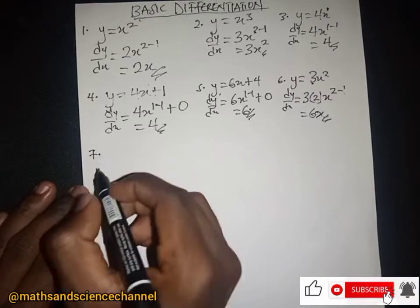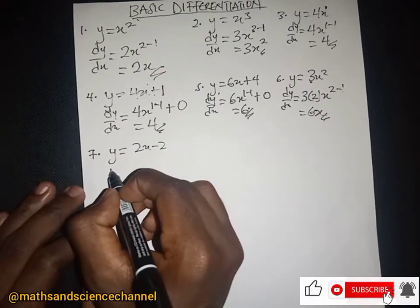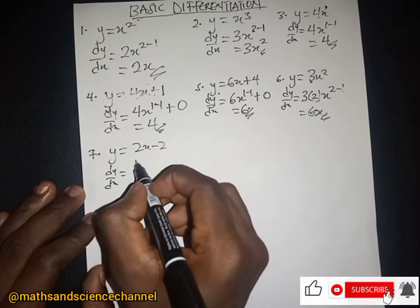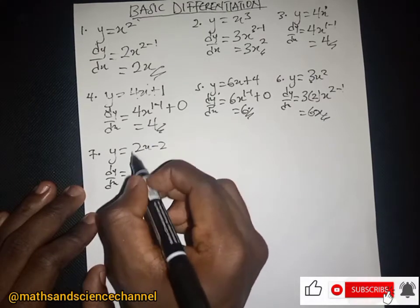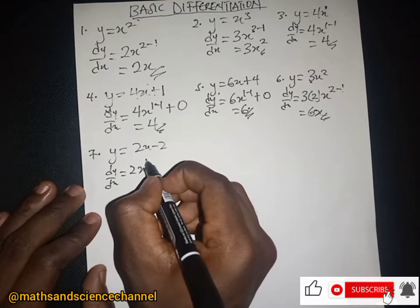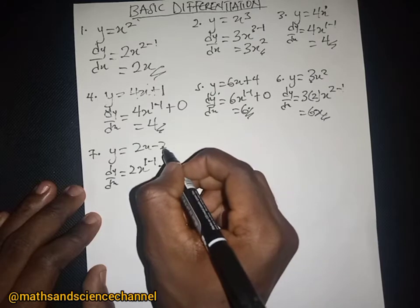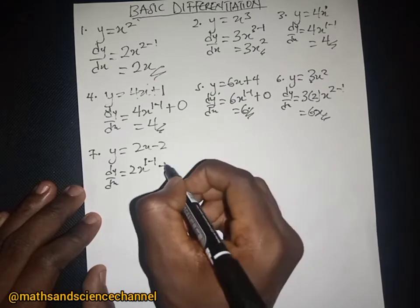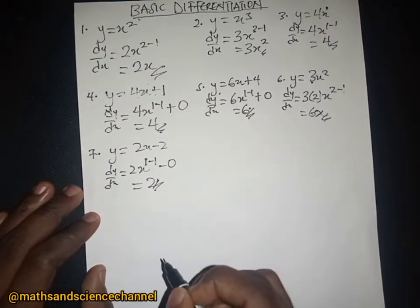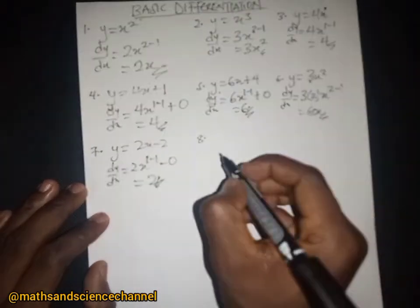Let's take for instance y equal to 2x minus 2. The dy/dx will be equal to — we drop the one which gives the same as 2, then 1 minus 1, and we differentiate the constant which is zero — so we are left with just 2.